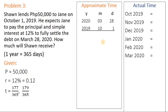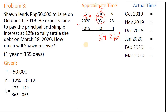Let me show how I got these values. For approximate time, I have March 28, 2020 minus October 1, 2019. The days: 28 minus 1 is 27. 3 minus 10 can't be deducted, so I borrow 12 months from the year, making it 2019 with 15 months total. So 15 months minus 10 months is 5 months. Multiplying 5 months by 30 days gives 150 days, plus 27 days, for a total of 177 days. That's the approximate time.